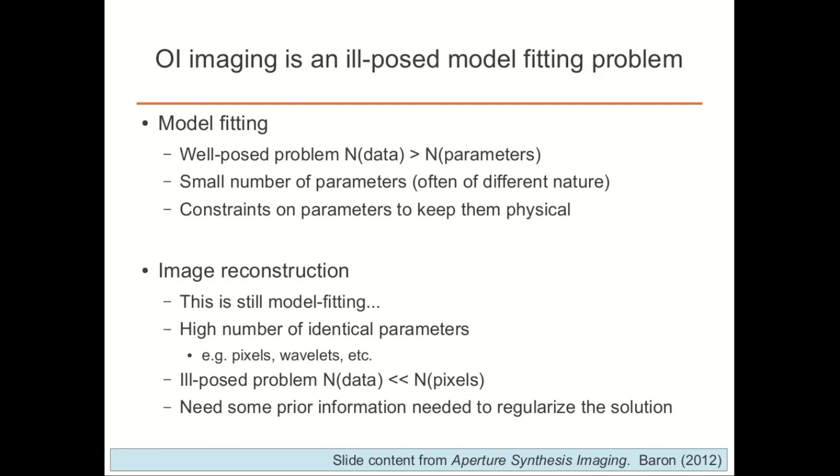Now, most people have been using data from interferometers with just a few number of telescopes, and so they've been doing pretty much model fitting. However, now with three or more telescope interferometers, you can actually form images. But unfortunately, optical interferometric imaging is an incredibly ill-posed model fitting problem. Now, what do I mean by this? So we think about model fitting. It's actually a well-posed problem in which you have many more data points than you have number of parameters. And you have a very small number of parameters, and they're often of some form of different physical nature, so you can constrain them in order to keep them physical.